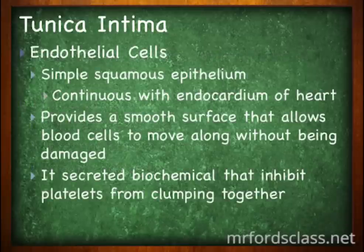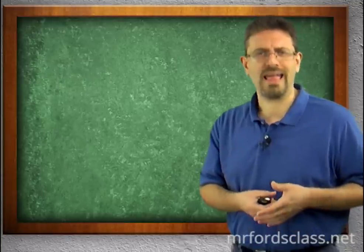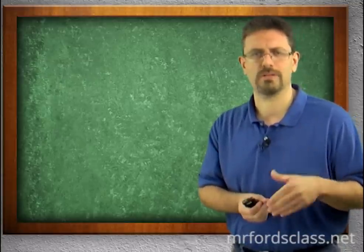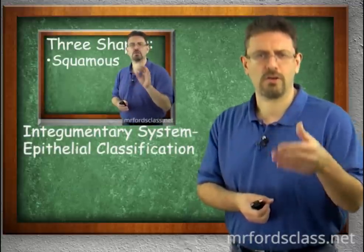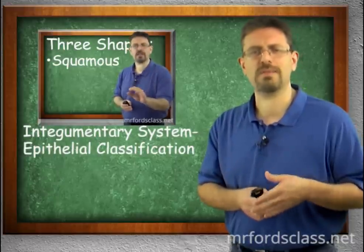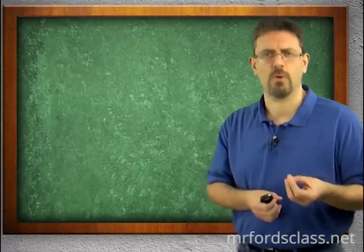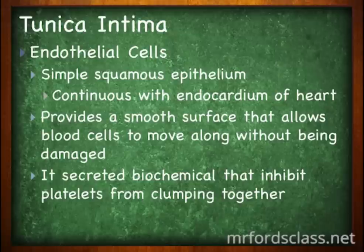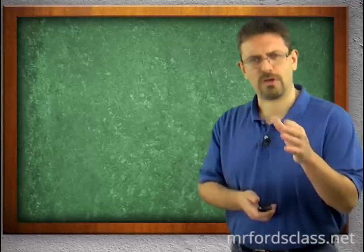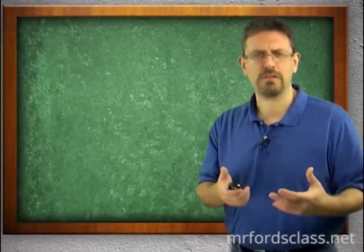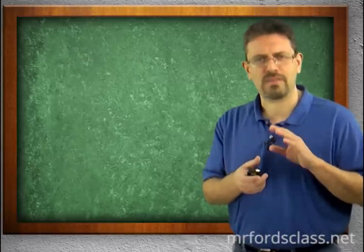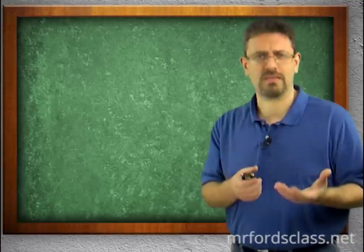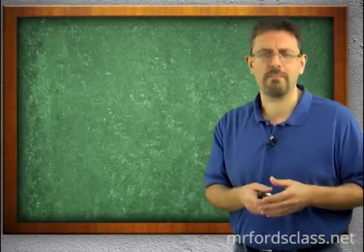The endothelial cells are very important. They are simple squamous epithelial tissue — one layer, squamous. The endothelial layer is continuous with the endocardium of the heart, the innermost lining on the inside of the heart. It provides a smooth surface that allows blood cells to move along without being damaged, reducing friction on the blood cells so they aren't busted up and destroyed before they can do their job.